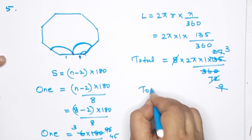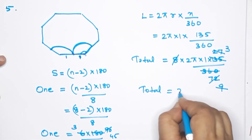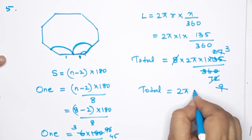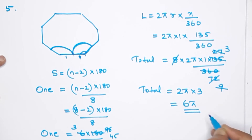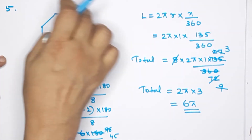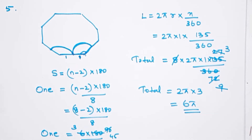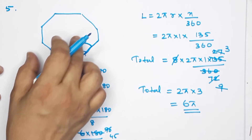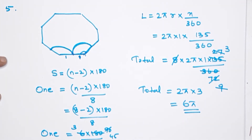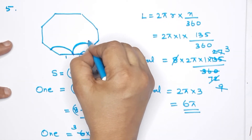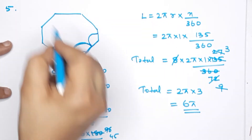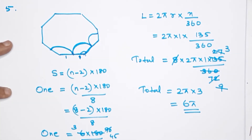Total length is 2π × 3 = 6π. The question is clear. Refer to the figure in the textbook — you can see the figure there. The angle is 135 degrees; that is the length of this arc, and there is one side.